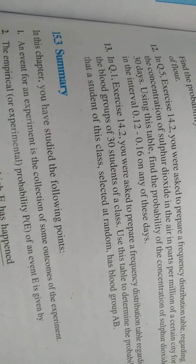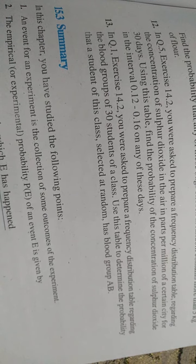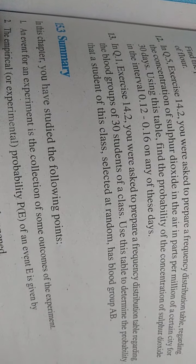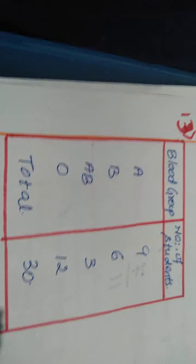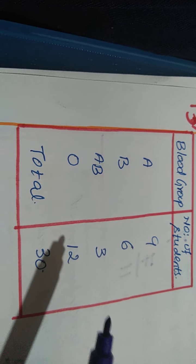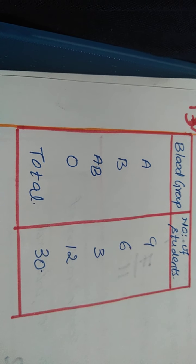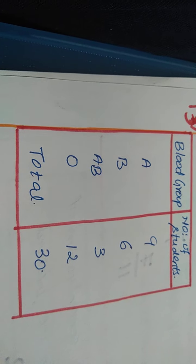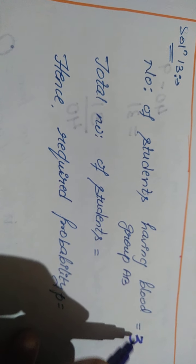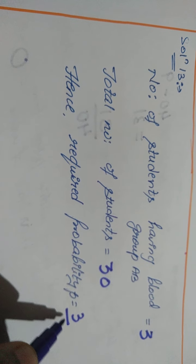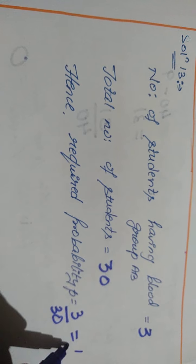Your 13th question is — you have to go to question number 1 of exercise 14.2 and find the probability of blood group AB. I have already tabulated for that question. Blood group AB — how many children are there? 3 students are there. So, 3 by total number of students — that is 3 by 30 will be your solution. Number of students having blood group AB was 3. Total number of students were 30. Hence, the probability is 3 by 30. On cancellation, you will get 1 by 10.